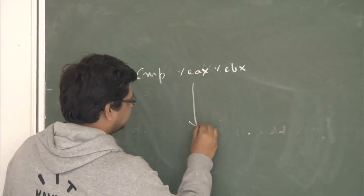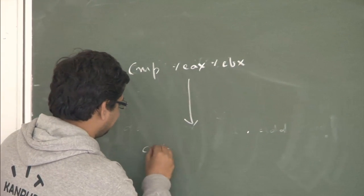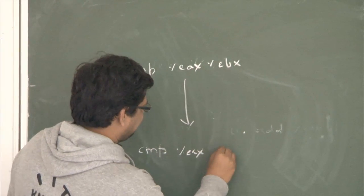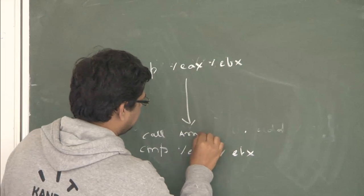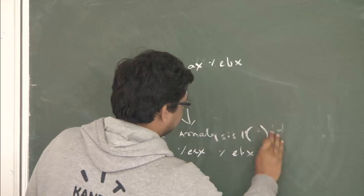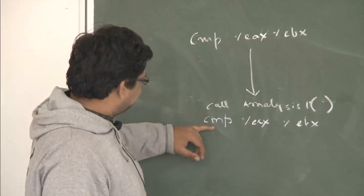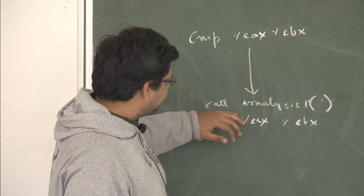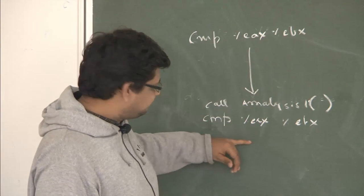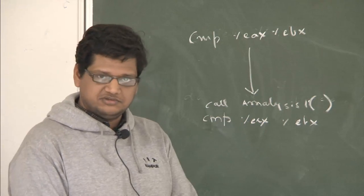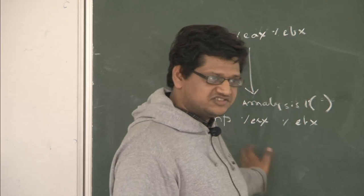The original application code is translated to generated code, which is very similar since we are going from machine code to machine code. A call to an analysis function is inserted before the target instruction. So each time that compare instruction is about to execute, the analysis function runs just before it.